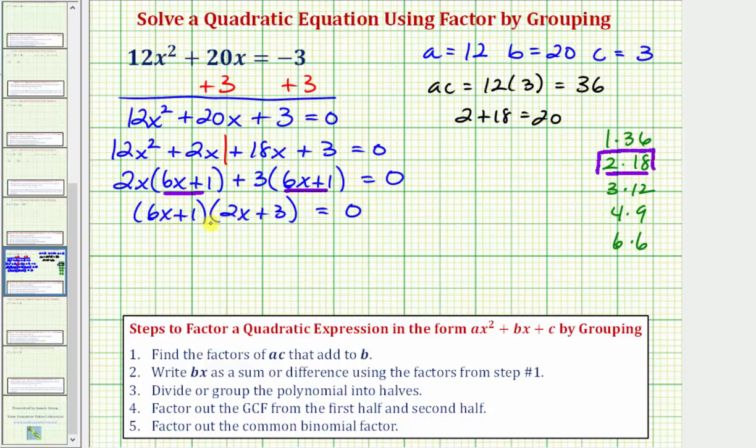Well, if we have a product that's equal to zero, either the first factor or the second factor must be equal to zero, which is the zero product property. So to solve the equation, we now set each factor equal to zero and solve for x. So this product equals zero if 6x plus one equals zero, or 2x plus three equals zero.